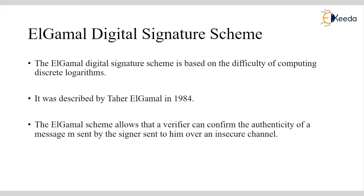The ElGamal scheme allows a verifier to confirm the authenticity of a message M sent by the signer over an insecure channel. Even if the channel is insecure, the receiver should receive the secured message and verify that whatever was sent by the sender is properly signed and encrypted. The ElGamal digital signature scheme is used both to implement and to verify the signature.